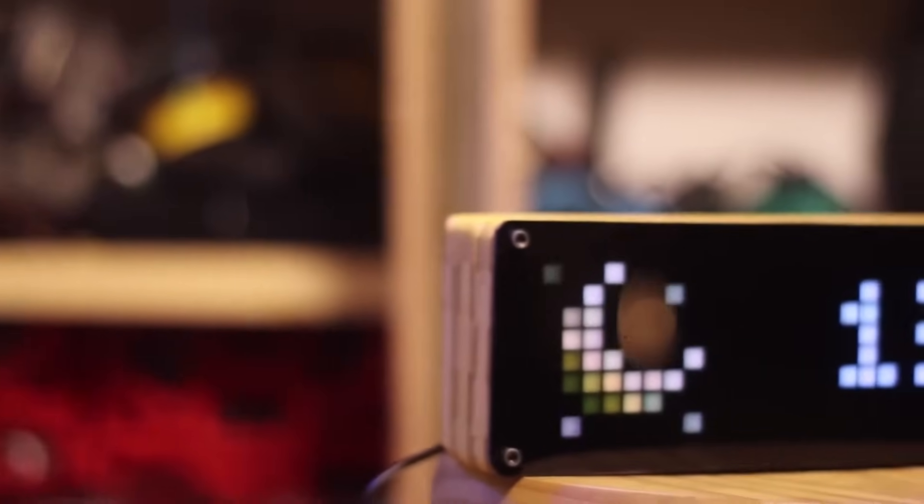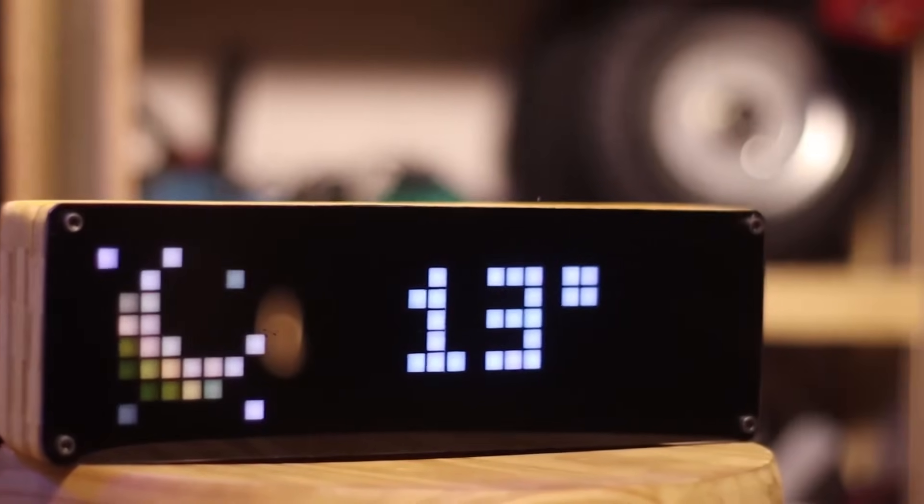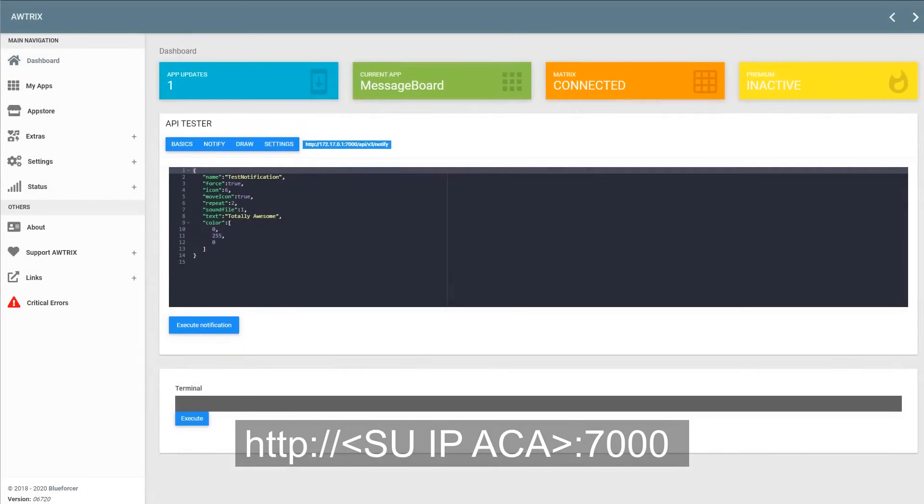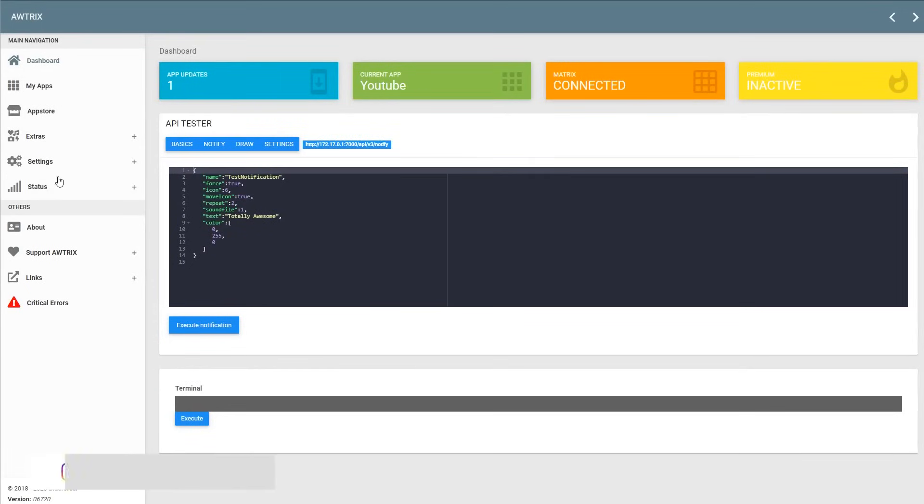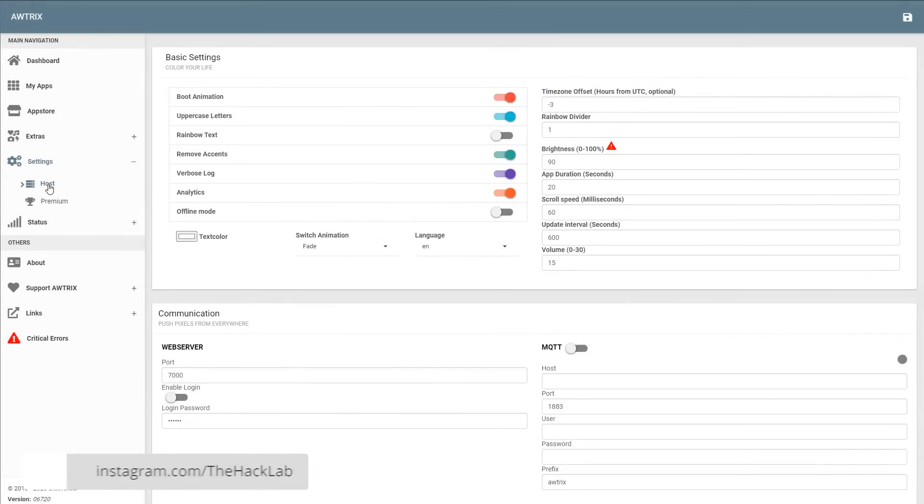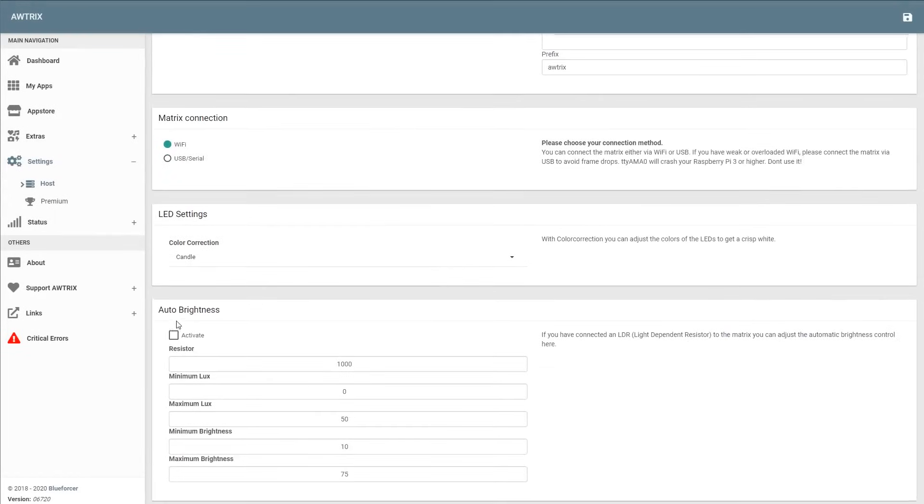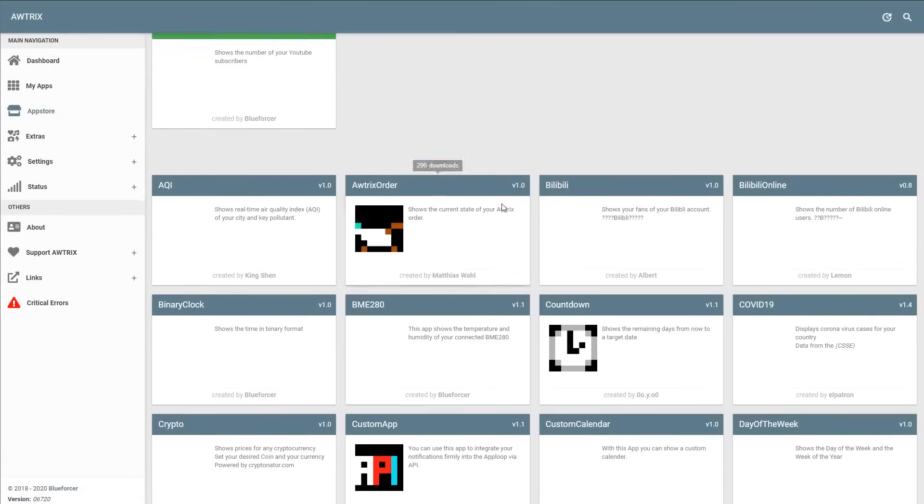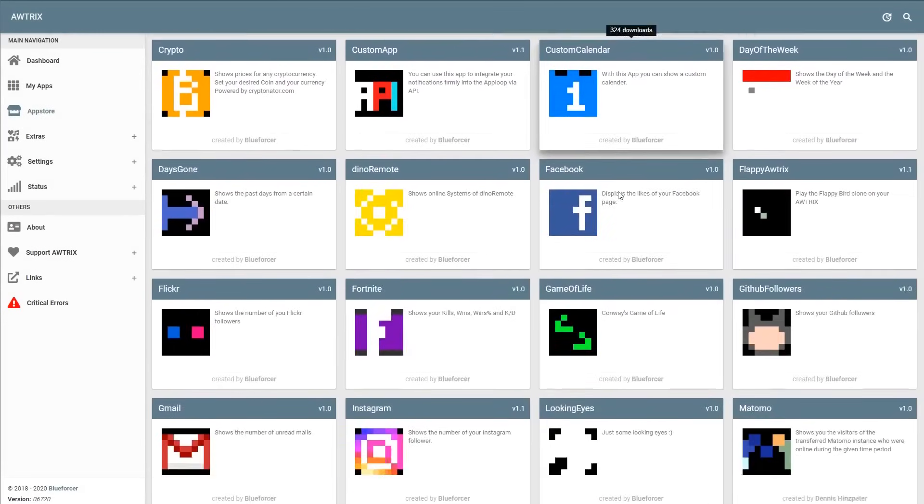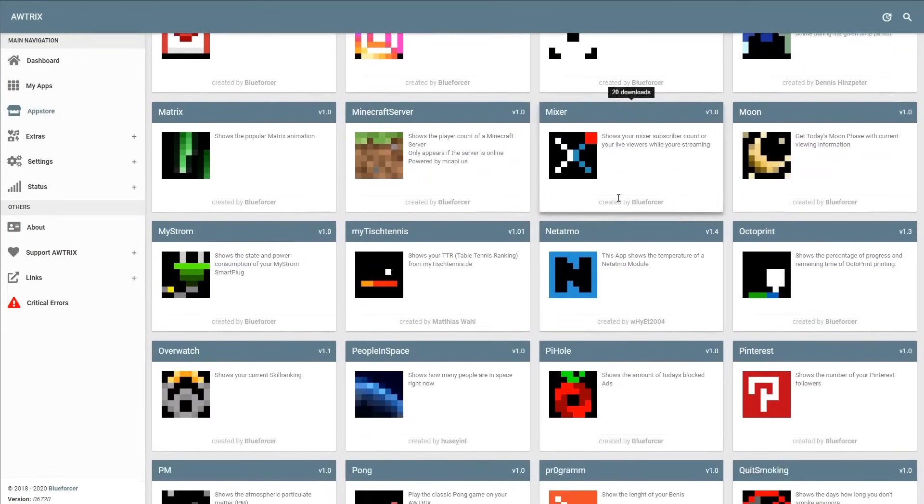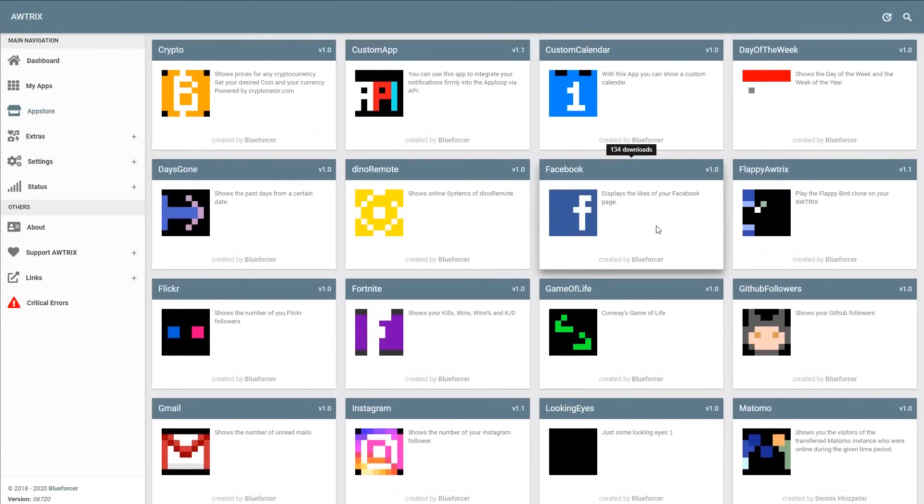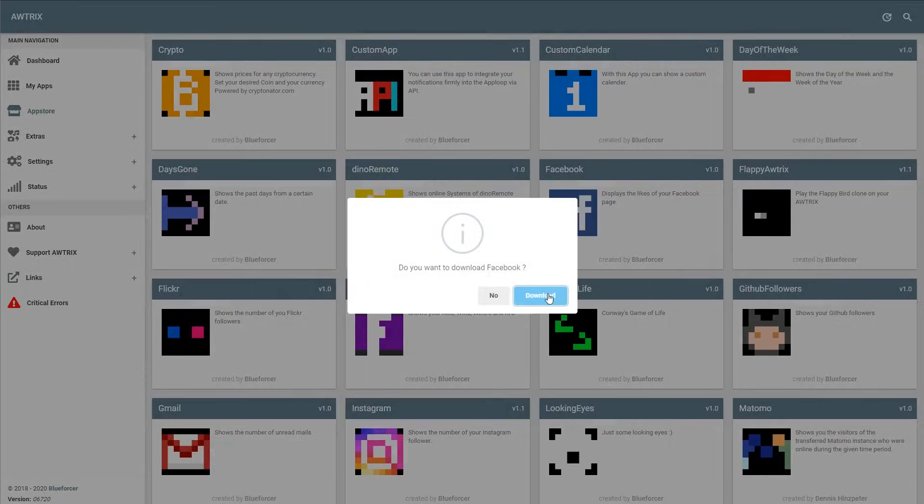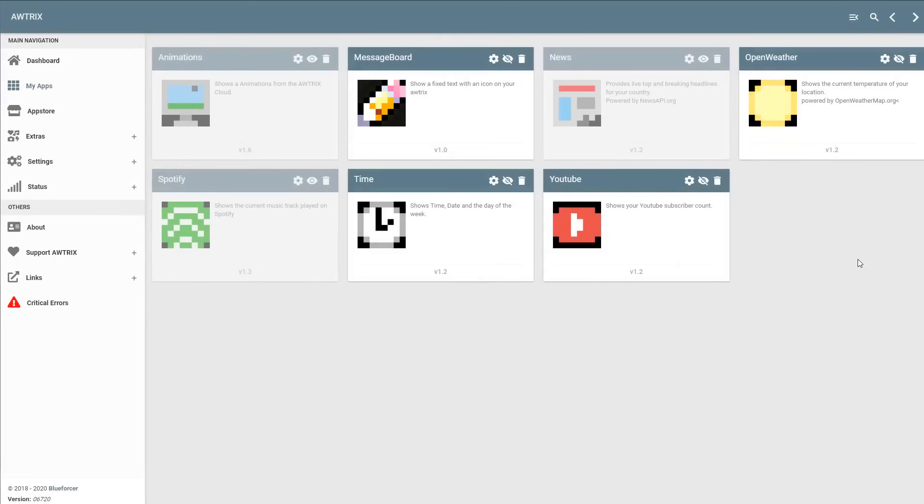Now another crucial point: how do I configure my clock? That's really very easy. Do you remember the IP you used before to set up the wifi? Type the IP into the browser followed by 7000. This opens a web page with all the settings. The most important setting is the app store. All the applications that the watch has will appear to you, some created by the community and others created by its creator, which is Blue Forcer, who is the one who created this free software.